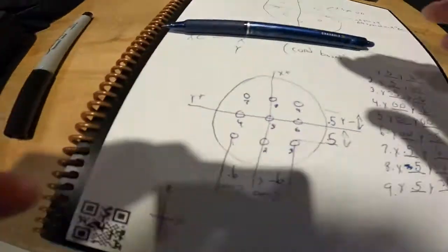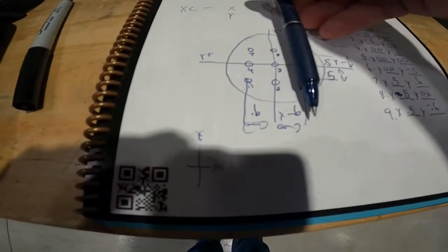Now we're going to cursor down and do another point. X and Y stays highlighted because it knows you want to do another hole. Now we're going to do hole number two. Remember X goes this way, so it's still going to be X negative 0.5.